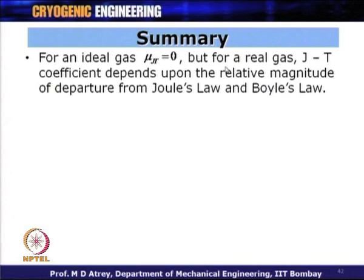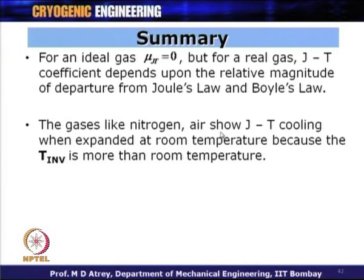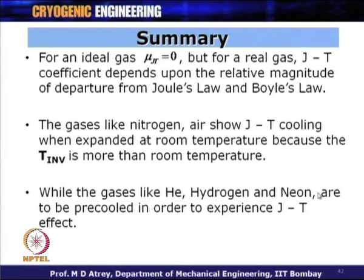To summarize: for an ideal gas, mu_JT equals zero, but for a real gas, the JT coefficient depends on the relative magnitudes of departure from Joule's law and Boyle's law. Gases like nitrogen and air show JT cooling when expanded at room temperature because their inversion temperature is above room temperature. However, helium, hydrogen, and neon must be pre-cooled below their inversion temperature to experience JT cooling.